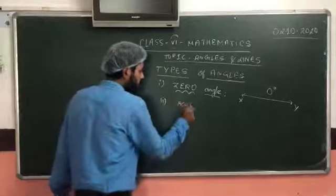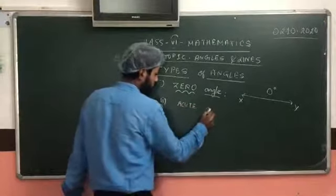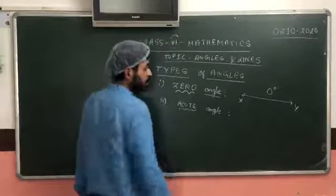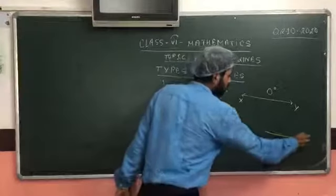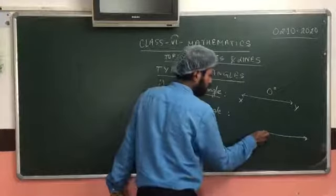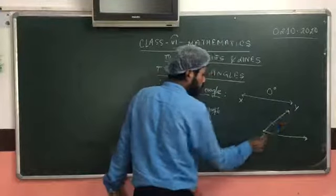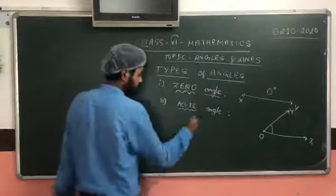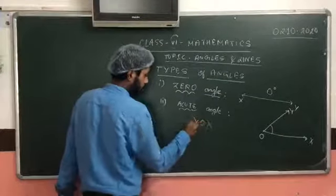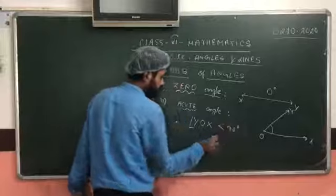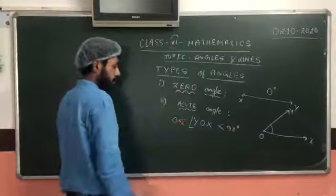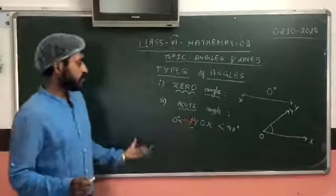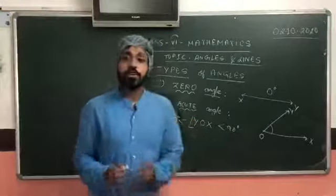Next, we slightly increase the opening, but not too much. What we get is an acute angle. What is an acute angle? With points O, X, and Y, this angle is such that it is greater than zero degrees but lesser than 90 degrees. Such an angle will be called an acute angle.